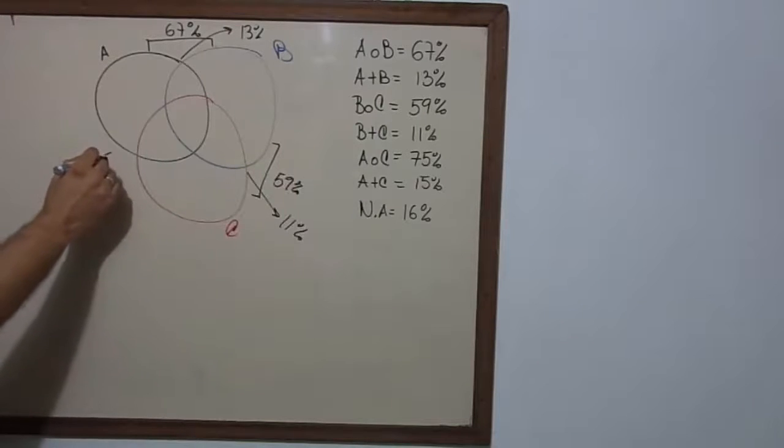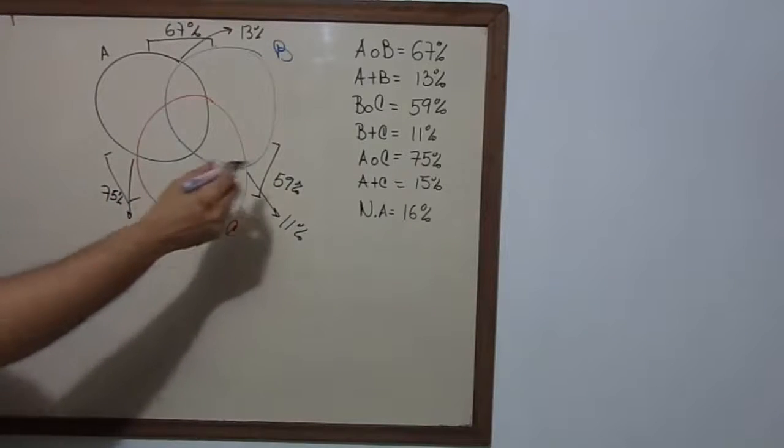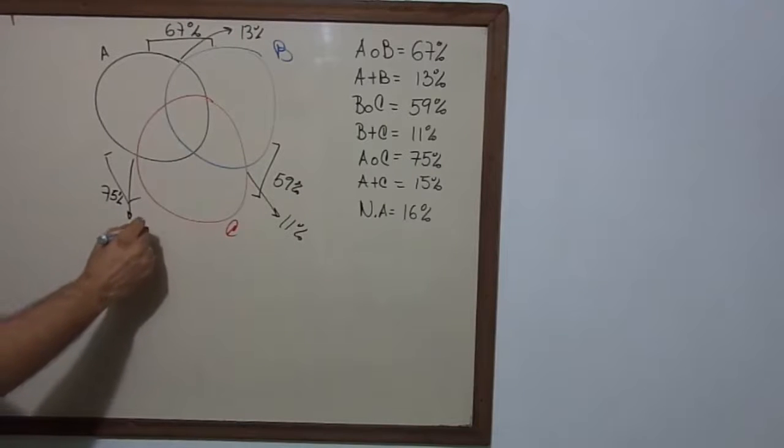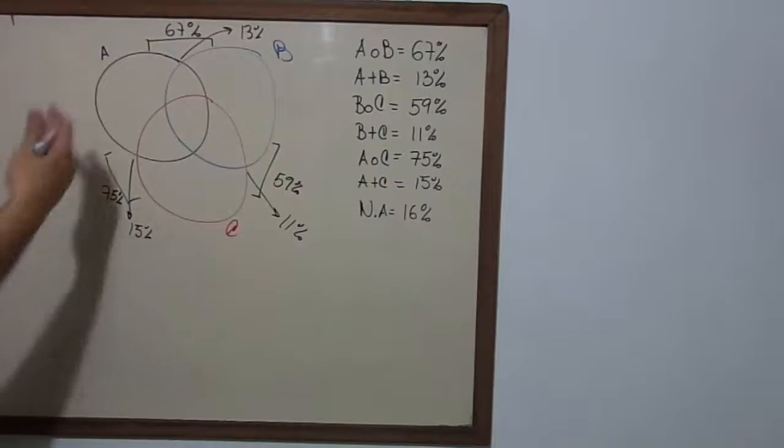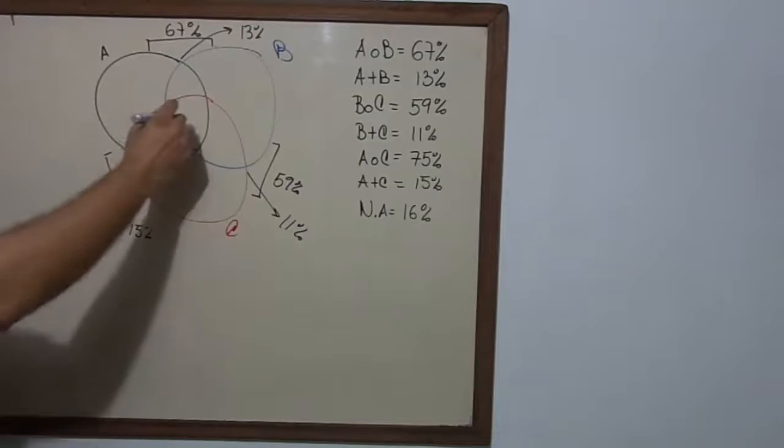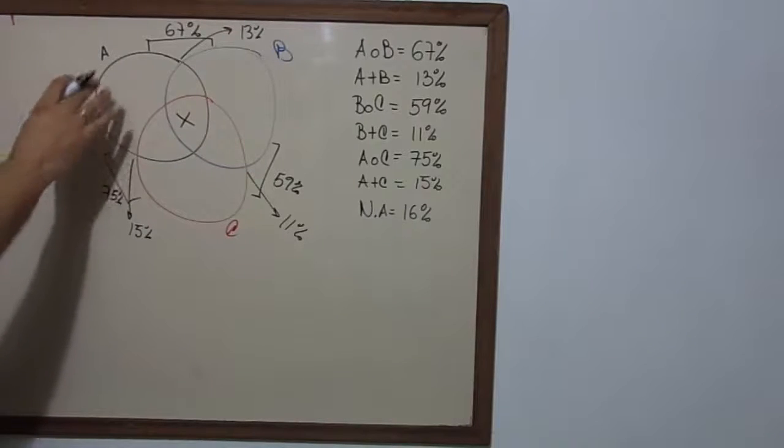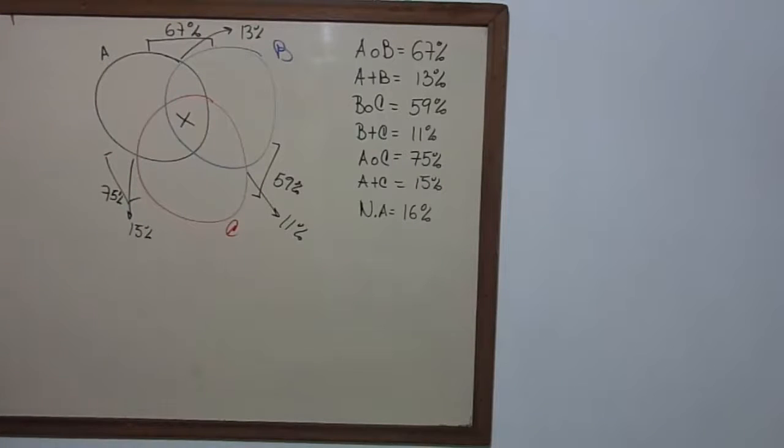A or C are equal to 75%. And we're going to need to fill this up. And the problem is we don't have the number in the middle. So we're going to call it X. And we're going to try to find as many values as we can right here.